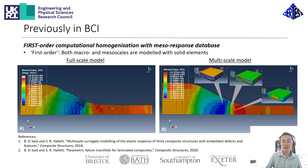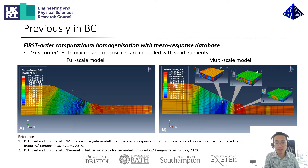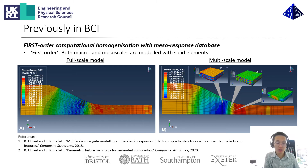Previously in the Bristol Composite Institute, this type of approach has been developed by Basama El-Sai and Stephen Hallert using a so-called first-order computational homogenization, where essentially solid models are used at both the macro and the mesoscopic length scales, as opposed to our current approach where we have shell elements at the macro scale and solid elements at the mesoscopic scale. If you're interested in this work, please visit the papers cited here.